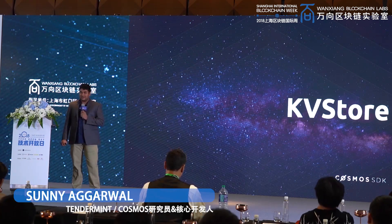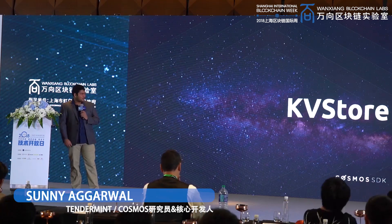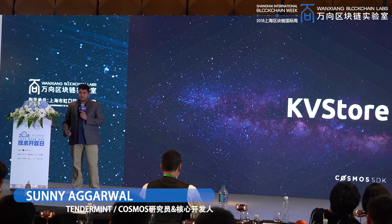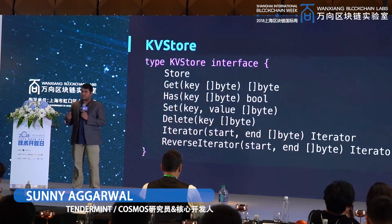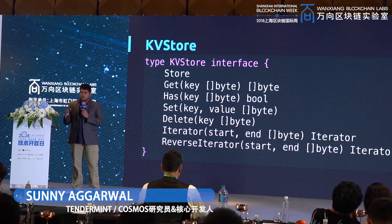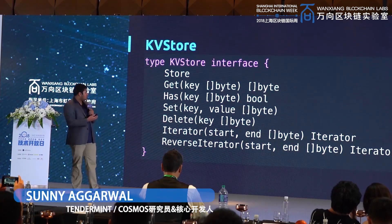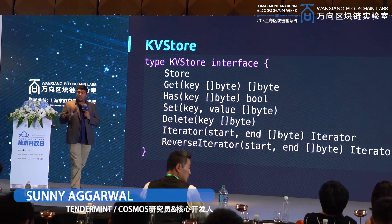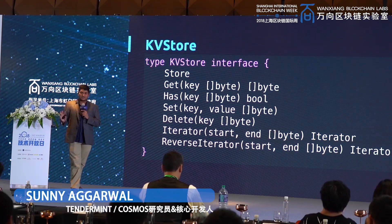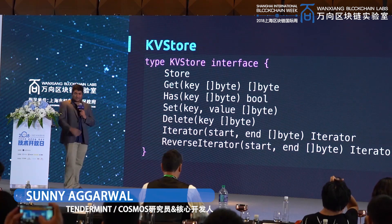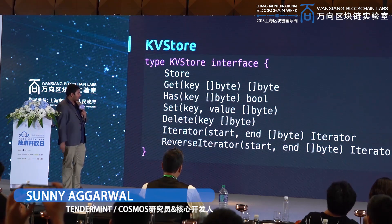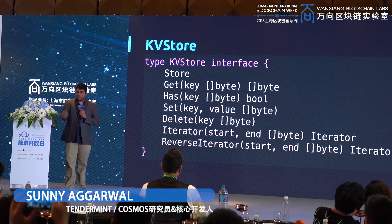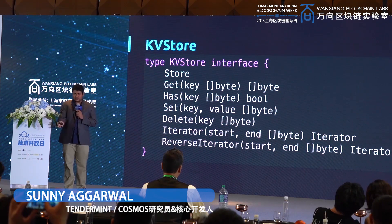Let's jump right into the hands-on tutorial. In a state machine, the first thing you need is a state. You need a store — basically something that defines what you are updating. This is our basic store. All of this is in Go, so if you're familiar with Go you can kind of understand the code. It has the basic stuff: you can get something from the store, you can put something in the store, you can delete something from the store.